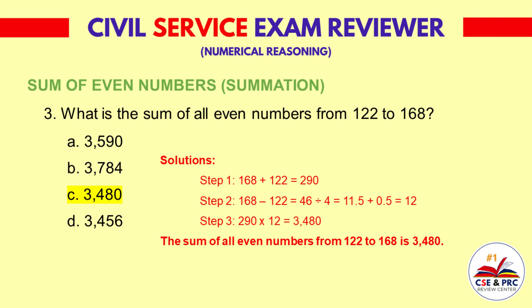Step 2: 168 minus 122 is equal to 46, divided by 4 is equal to 11.5, plus 0.5 is equal to 12. Step 3: 290 times 12 is equal to 3,480. The sum of all even numbers from 122 to 168 is 3,480.